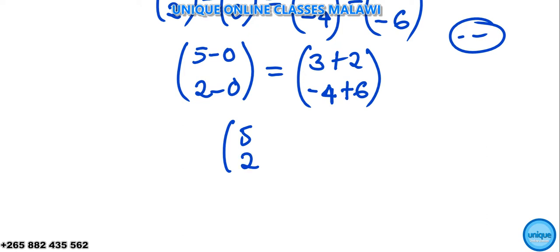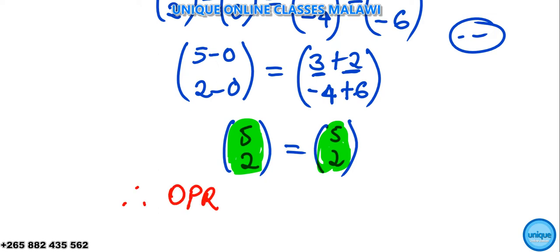So we have 5 minus 0 that's 5, and 2 minus 0 that's 2, is equal to 3 plus 2 that's 5, and negative 4 plus 6 that's positive 2. So you can see that this left hand side is the same as the right hand side. Therefore we're going to conclude now that OPQR is a parallelogram.